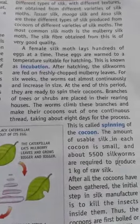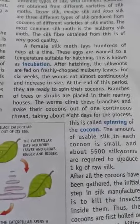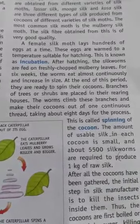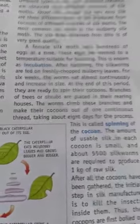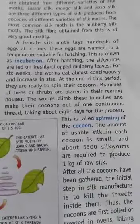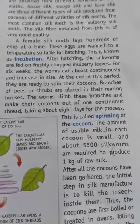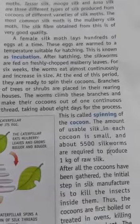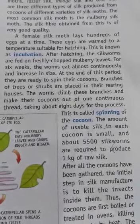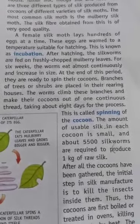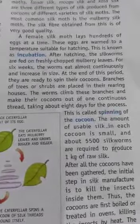A female silk moth lays hundreds of eggs at a time. These eggs are warmed to a temperature suitable for hatching, a process known as incubation. After hatching, the silkworms are fed on finely chopped mulberry leaves. For six weeks, the worms eat almost continuously and increase in size. At the end of this period, they are ready to spin their cocoon. Branches of trees or shrubs are placed in their rearing houses. The worms climb these branches and make their cocoons out of one continuous thread, taking about eight days for the process. This process is called spinning of the cocoon.